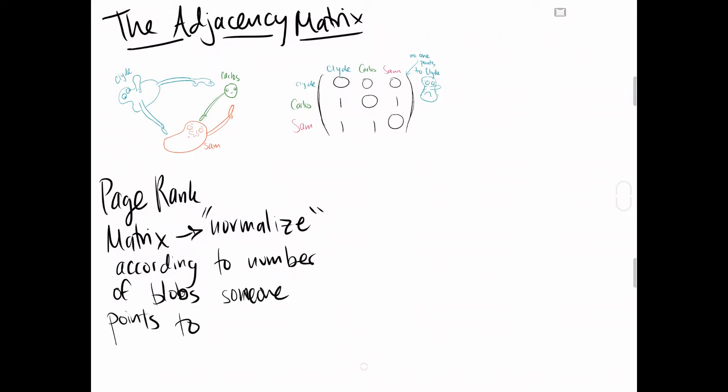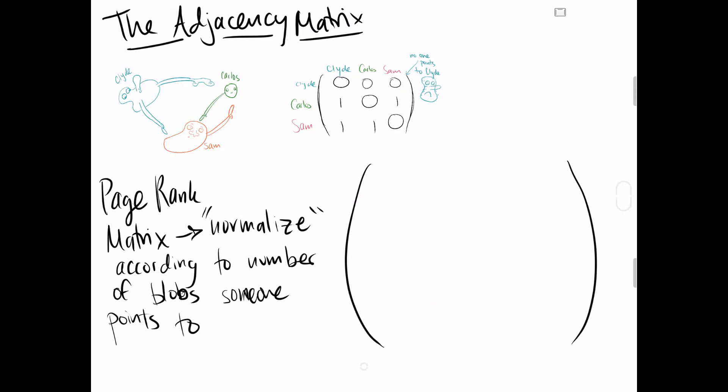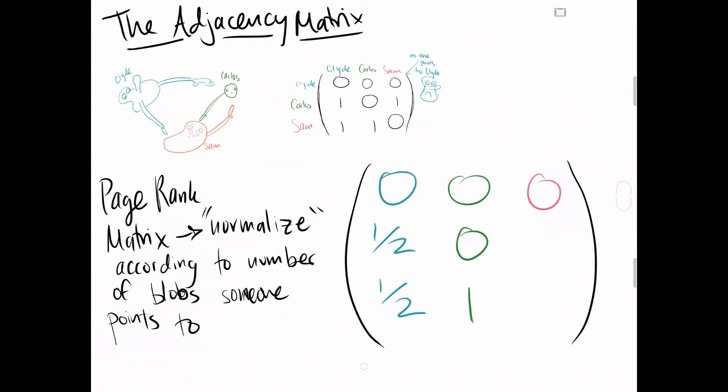Additionally, the matrix is normalized to account for people who split their vote and are not given more influence. For example, since Clyde thinks both Carlos and Sam are likable, his vote is split in half, thus his column vector is now 0-1/2-1/2. A similar process like this is used to represent sites and their links to one another.